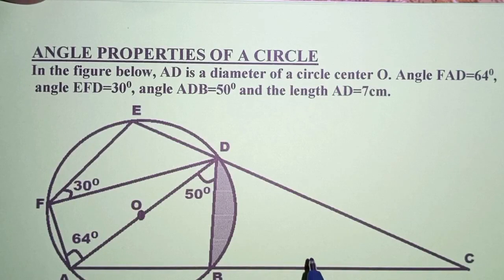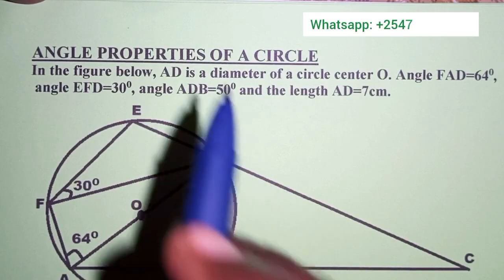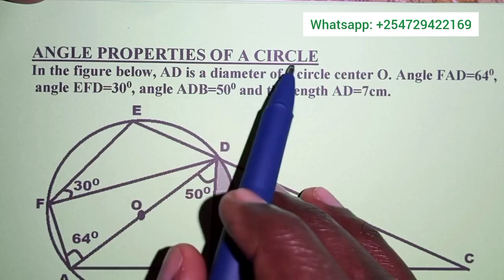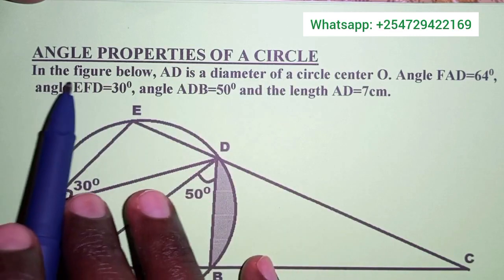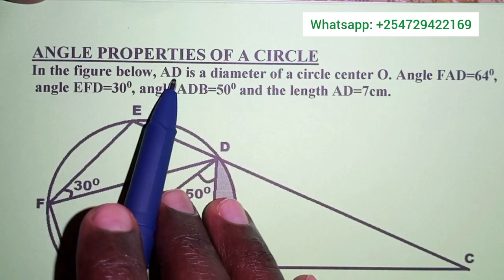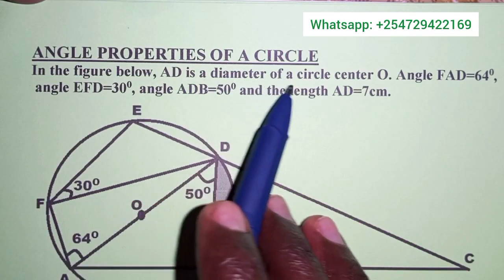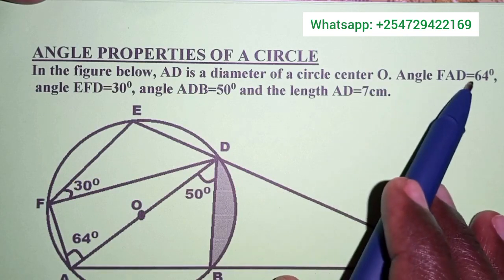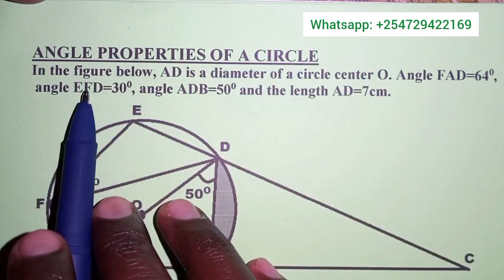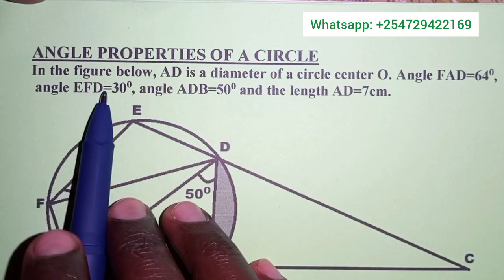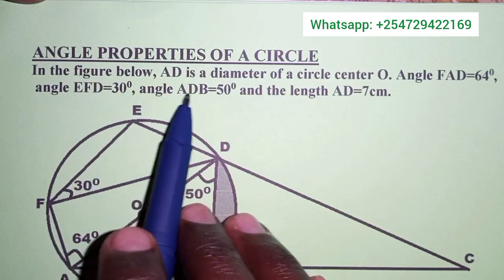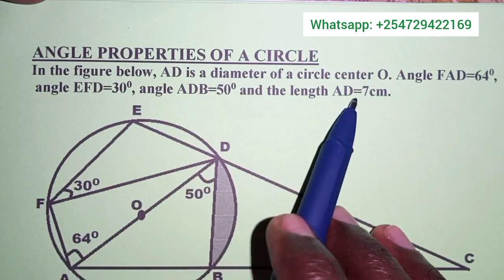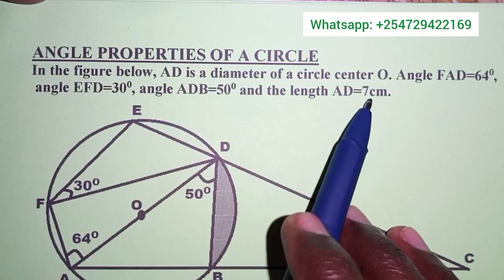Welcome to this presentation. Today's question is about angle properties of a circle. In the figure below, AD is the diameter of a circle with center O. Angle FAD is 64 degrees, angle EFD is 30 degrees, angle ADB is 50 degrees, and length AD is 7 centimeters.